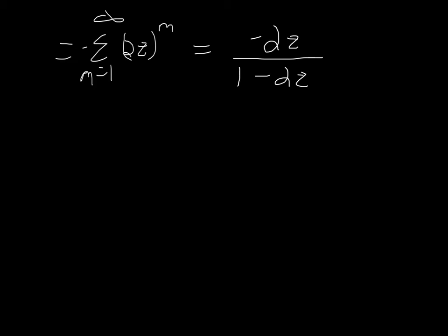That's actually the z-transform. To get it in a form that you're probably used to seeing in the lookup table, we factor out a negative 2z from the top and bottom, and it's just going to be 1 over 1 minus one-half z inverse.